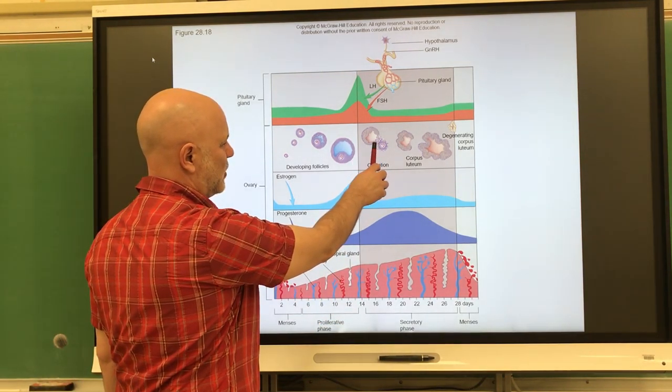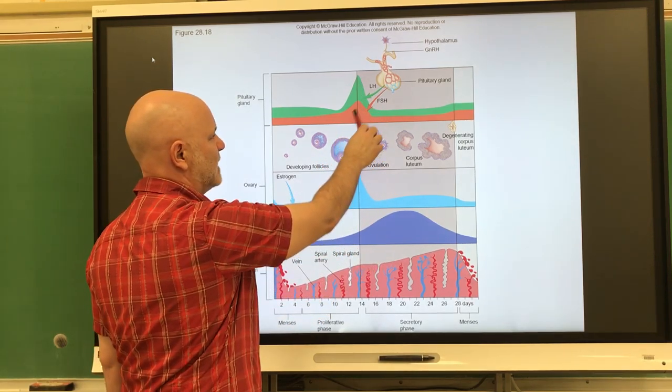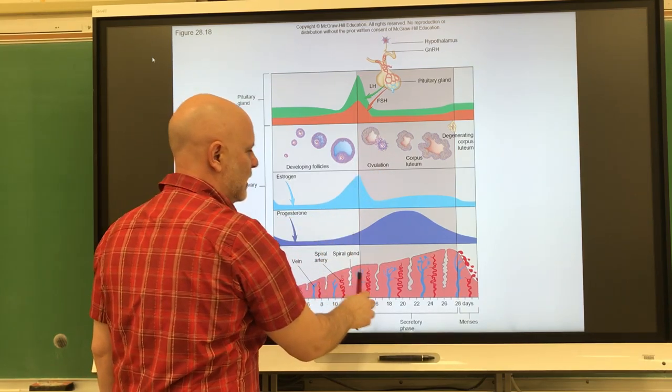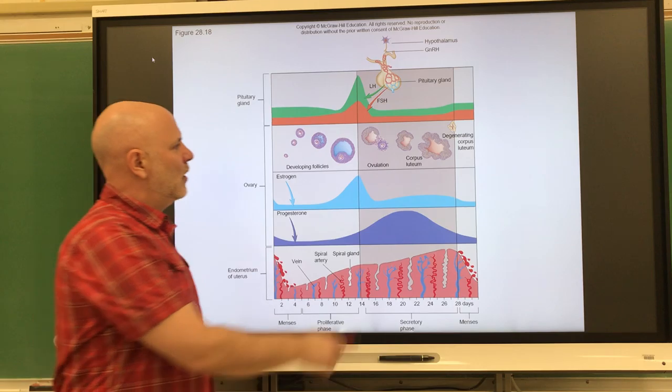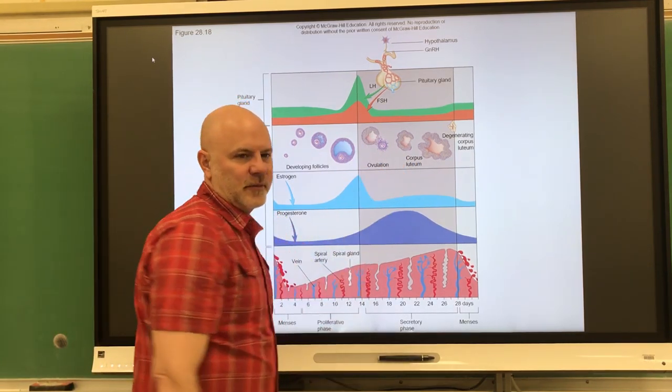What we see occurring here: ovulation occurs. We get a spike in luteinizing hormone and follicle stimulating hormone causing ovulation. Now let's look at what's occurring here. After ovulation, that follicle becomes a corpus luteum.